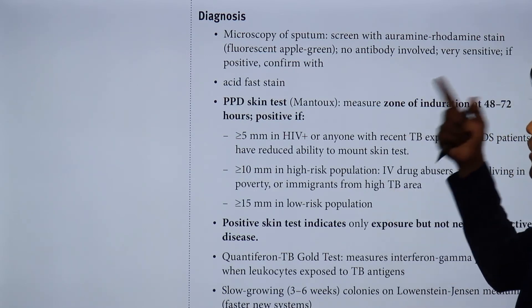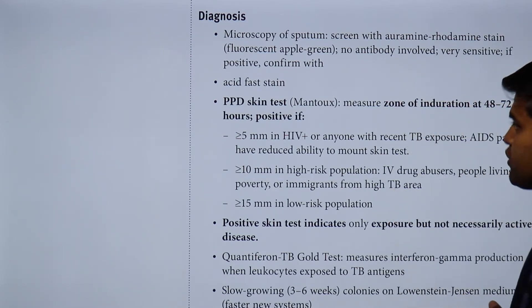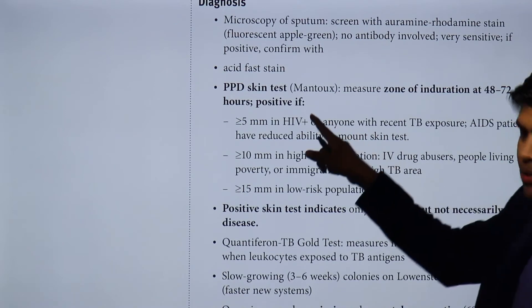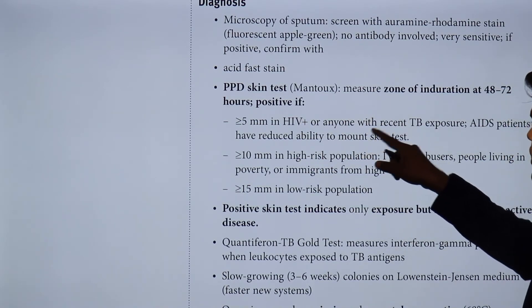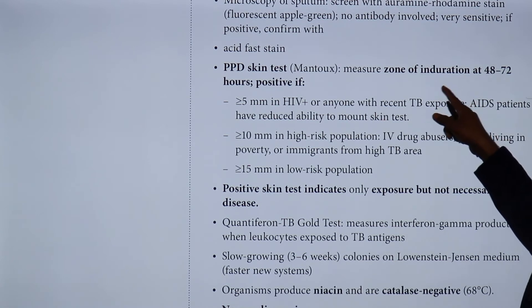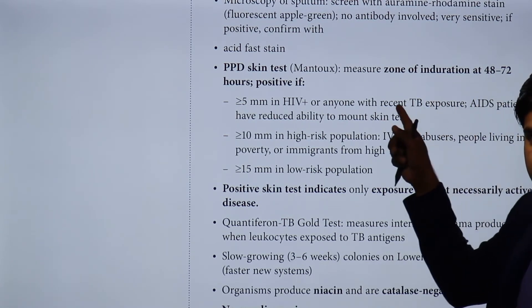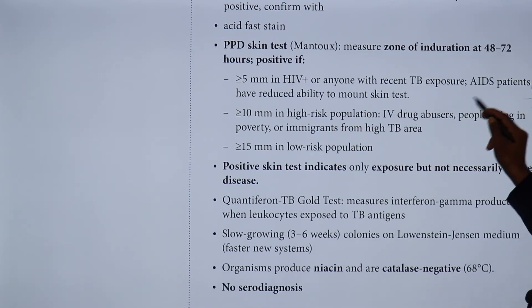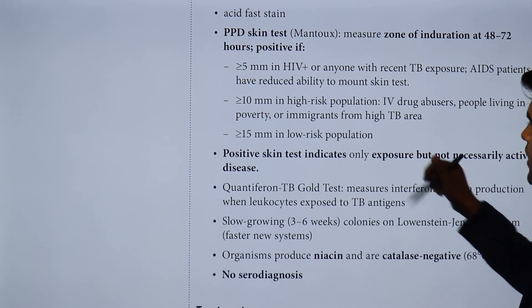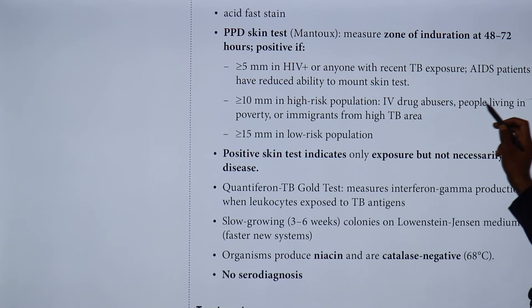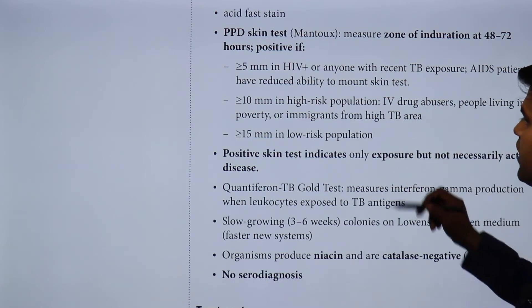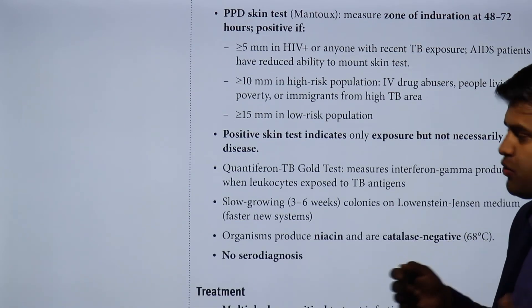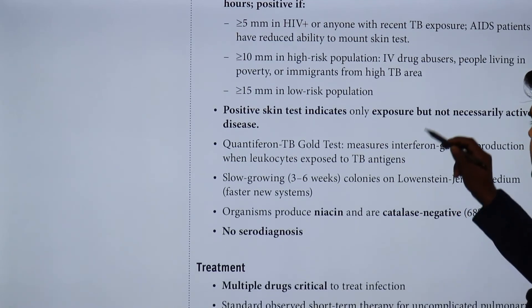Diagnosis includes microscopy of sputum with auramine-rhodamine or acid-fast stain, and the PPD (Mantoux) skin test. The zone of induration is measured after 48 to 72 hours. A result of more than 5 mm is positive in HIV patients or those with recent TB exposure. More than 10 mm is positive in high-risk populations such as IV drug users, people in poverty, or immigrants from high-TB areas. Greater than 15 mm is positive in low-risk populations.